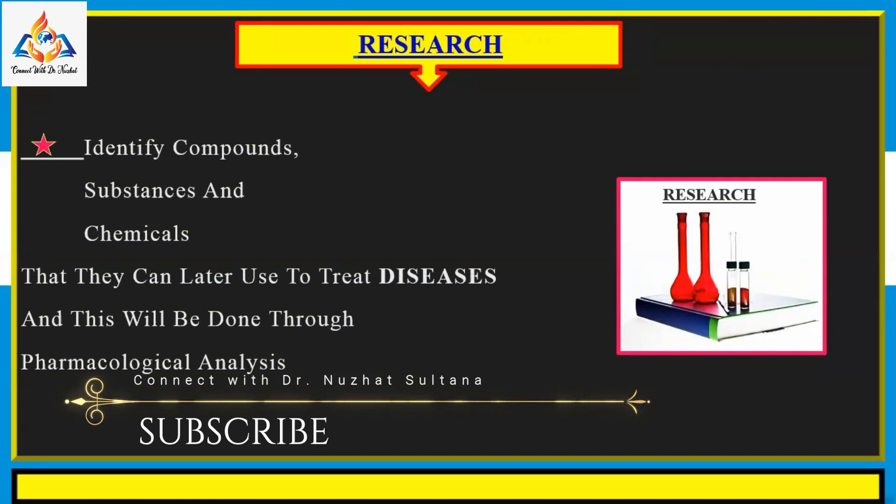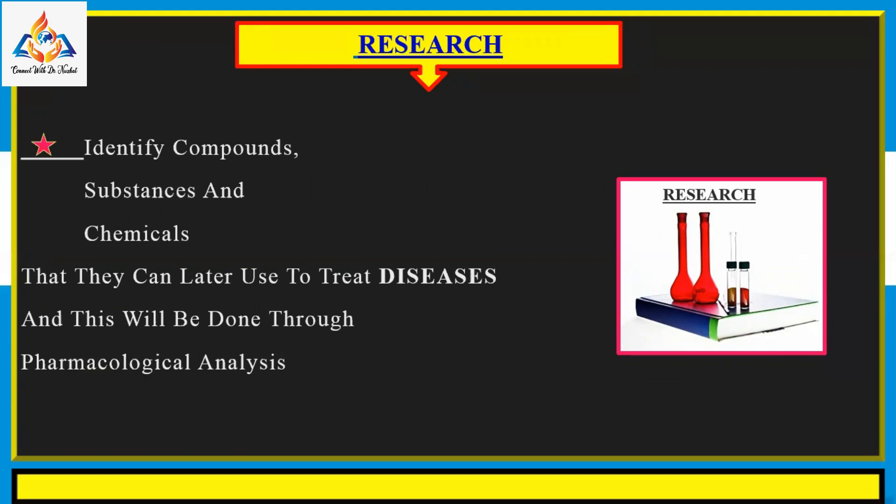Researchers are interested in how drugs can help prevent, diagnose, or treat diseases and conditions. They are also interested in how some drugs can improve general health. In research, they identify new compound substances and chemicals that can later be used to treat diseases, and this is done through pharmacological analysis.